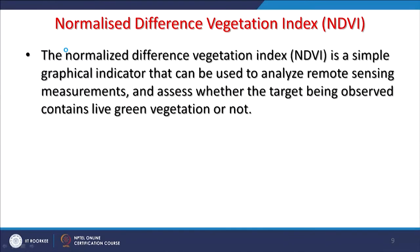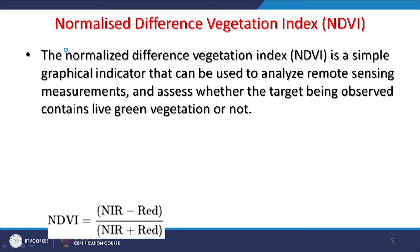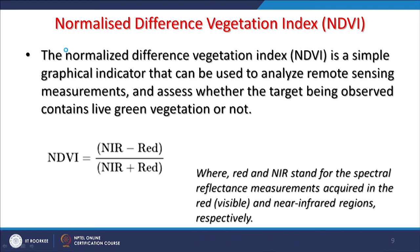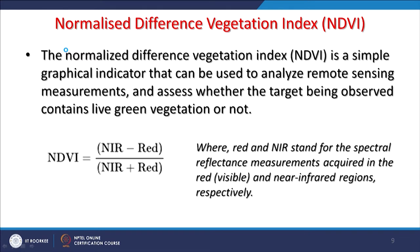NDVI is a simple graphical indicator which can be used to analyze remote sensing measurements and multispectral data, and to assess whether the target — vegetation — contains live green vegetation or not, meaning it contains a good amount of chlorophyll content. NDVI = (NIR − Red) / (NIR + Red), where red and infrared stand for spectral reflectance acquired in the red visible and near infrared regions of the EM spectrum, respectively.